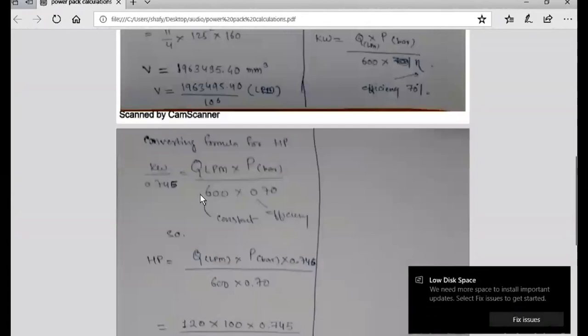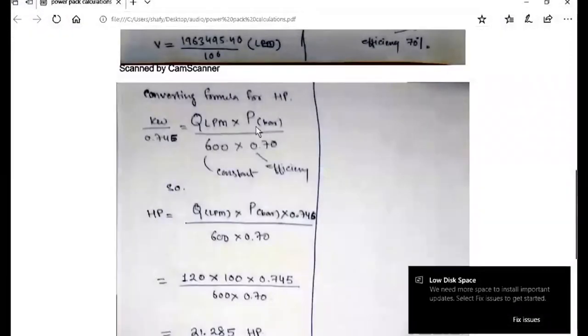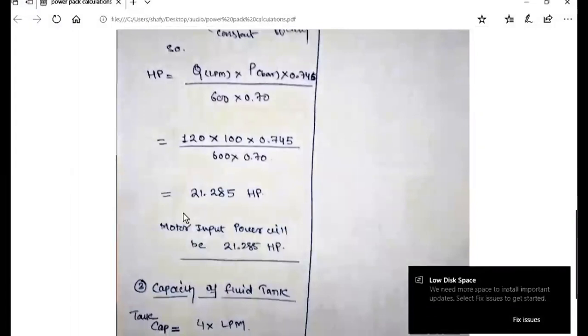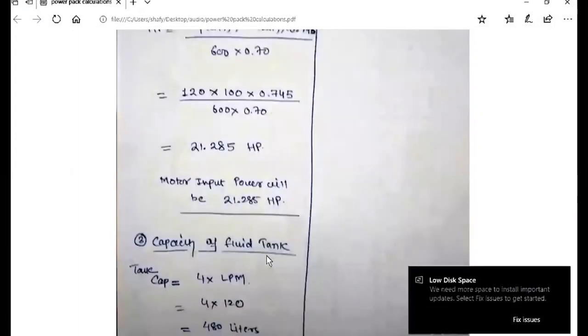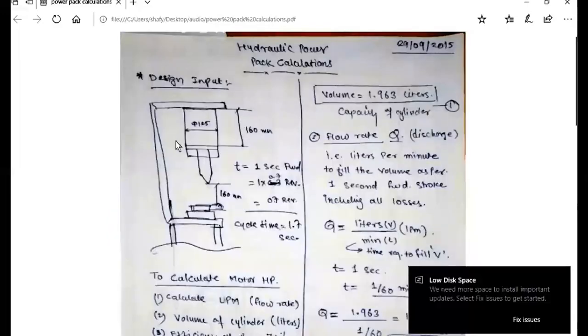After calculating and putting all this in, kilowatt, if we convert into horsepower, we'll divide by 0.745 and you get the answer as 21.285 horsepower. That is our horsepower. And to calculate the capacity of the tank, it should be four times LPM, so four into 120, that is 480 liters should be the tank capacity.